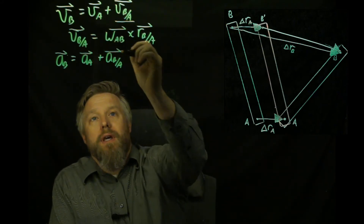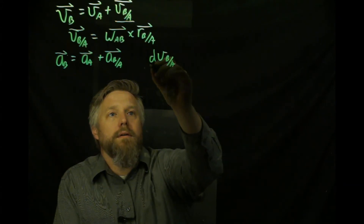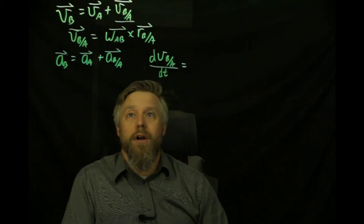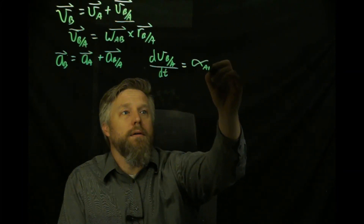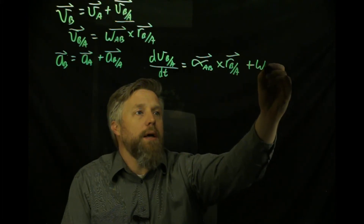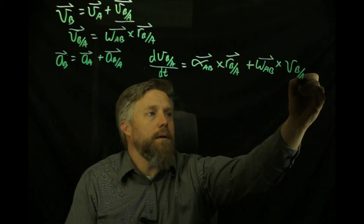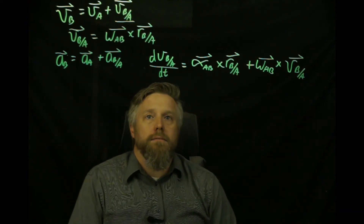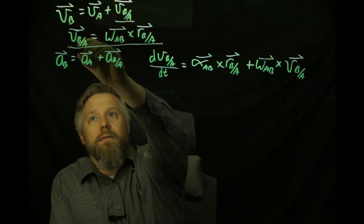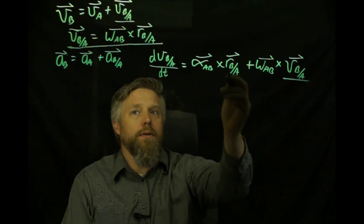To dig into that, we can just take the derivative of the second equation. The derivative of the velocity of b with respect to a, with respect to t — since we're taking the derivative of a product, we need to use the product rule. That gives us the derivative of the first term, which is alpha_ab crossed with the position of b with respect to a, plus omega_ab crossed with the derivative of the second term, which is the velocity of b with respect to a. We can then substitute our second equation, giving us the velocity of b with respect to a in our translating coordinate system, and plug it in.